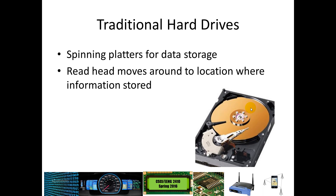Traditional hard disks store data on platters that spin around like an old record player. A read head goes around and locates your data. Your hard drive knows that data is stored at a particular location, so it uses a small motor to send the read head in or out, and another motor to spin the disk platter so it gets to the right place.